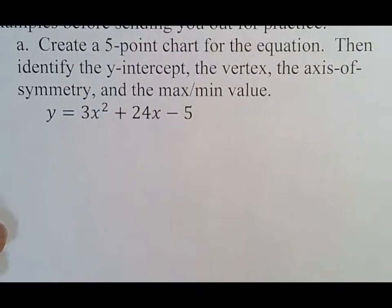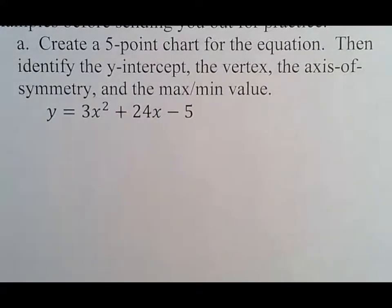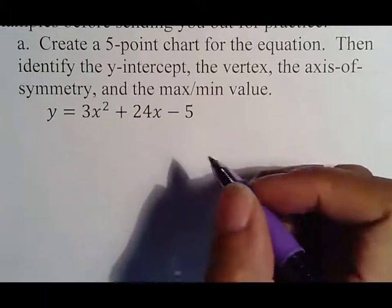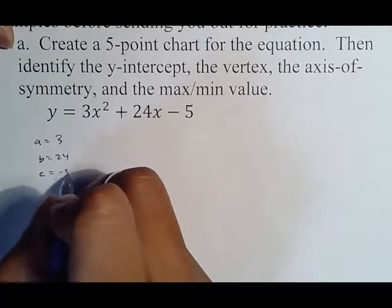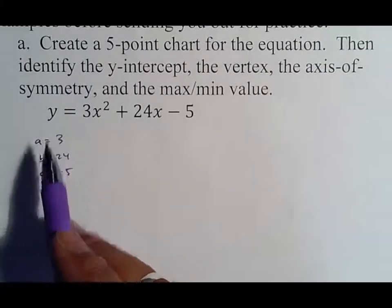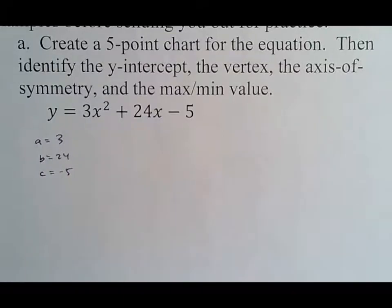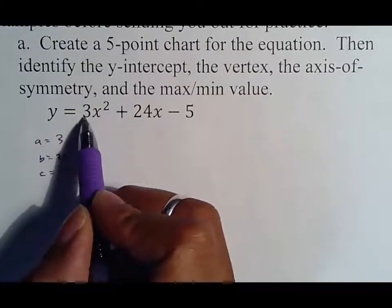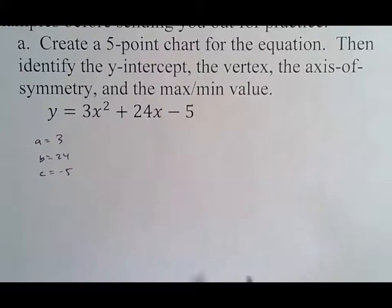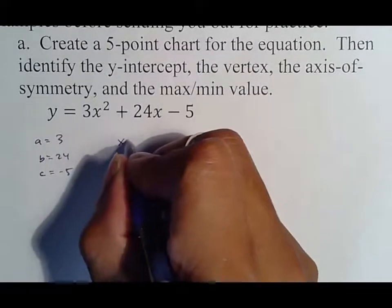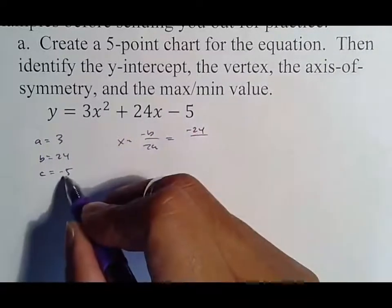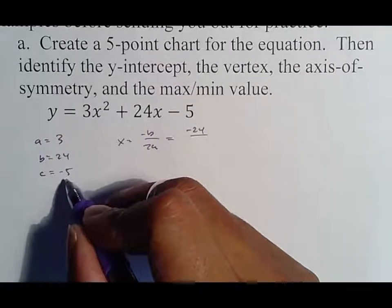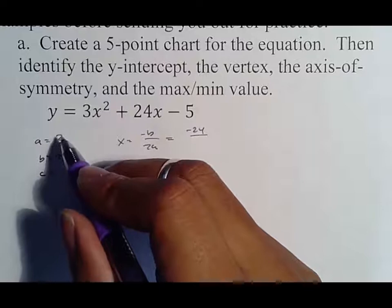Let's look at a couple of examples before sending you out for practice. Create a five-point chart for the equation, then identify the y-intercept, the vertex, the axis of symmetry, etc. First, identify that A is 3, B is 24, C is negative 5. A is what's attached to X squared, B is what's attached to X, and C is the number all by itself. My key X is negative B over 2A, which means take the opposite of B — negative 24 — over twice A, which is 6.